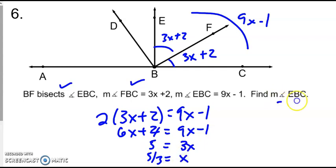Again, is that what we're looking for? Well, we're looking for angle EBC, the larger one. So we can simply plug that into 9X minus 1 and get that to be 9.